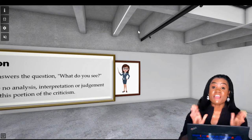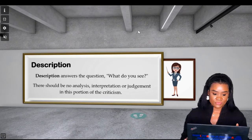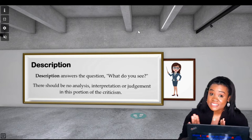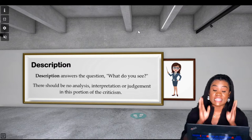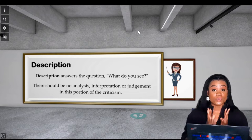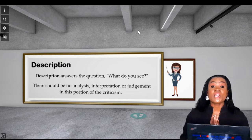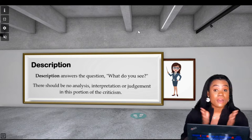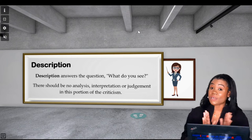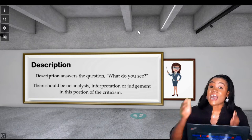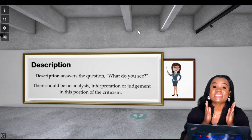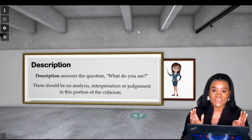So what is the description all about — the very first stage? The description answers the question: what do you see? There should be no analysis, no interpretation, no judgment in this portion of art criticism. You are only answering the question, what do you see? For example, if I ask you what color is the sky, you say the sky is blue. You're not going to tell me what blue means or how you feel when you see blue — I only asked for the color. You only state the facts. You bring no meaning to the facts.